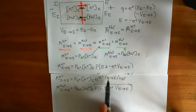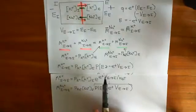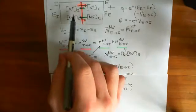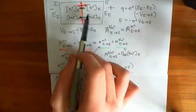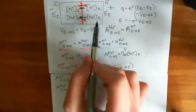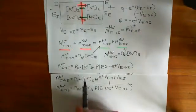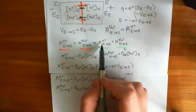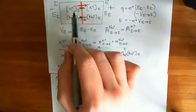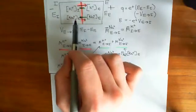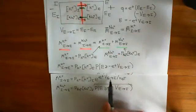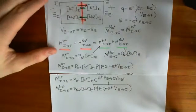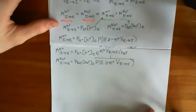Depending on what the voltage is from the extracellular compartment to the intracellular compartment, we now have formulas for the movement of potassium from intracellular to extracellular, and sodium from intracellular to extracellular. We're going to plug these back into the formula along with the constants for movements of potassium and sodium from extracellular to intracellular, and see what voltage is needed to make these two equate. That will be our resting membrane potential — we just need to solve for the voltage.